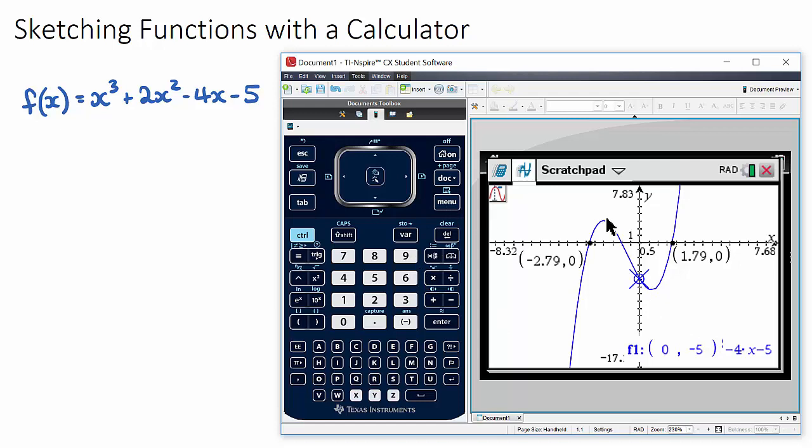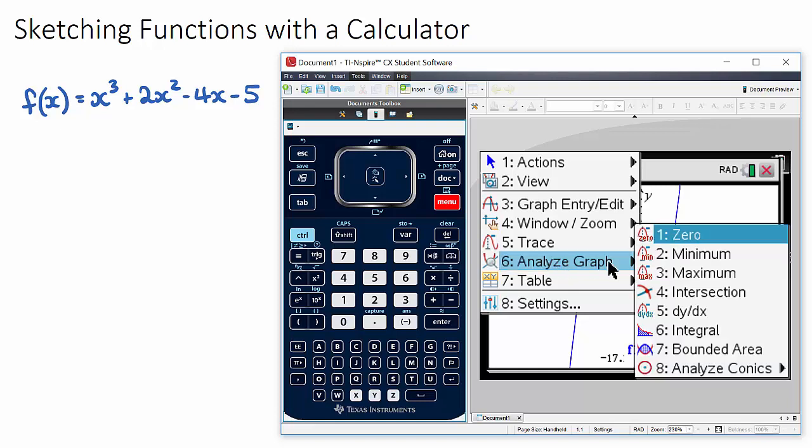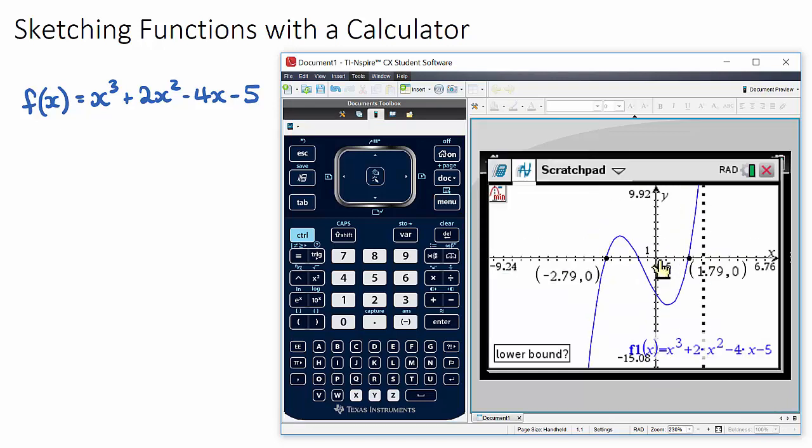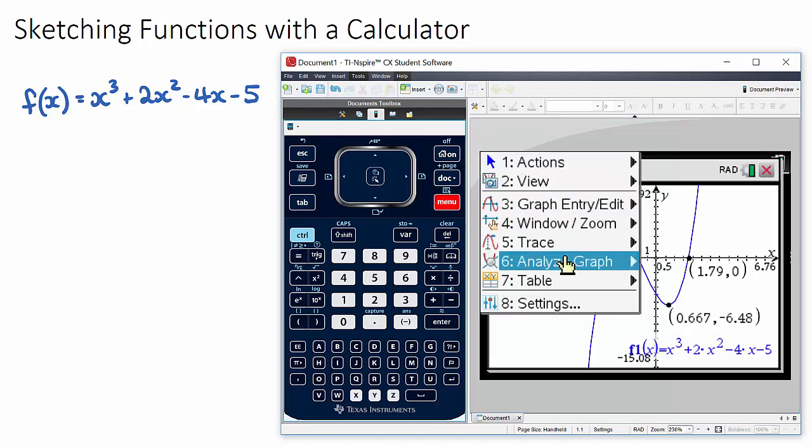If we want to find the maximum and the minimum, we go back to our analyze graph section - minimum and maximum. If we choose minimum first, this will obviously be our minimum, so define a lower bound here and an upper bound here. That's our minimum. The maximum is the same.